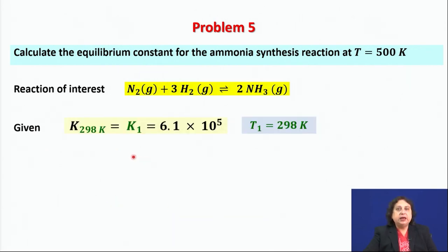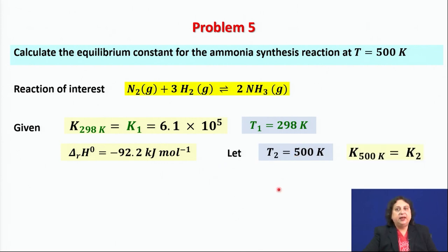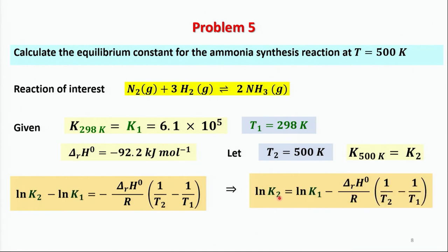Now all values are set: K₁ at T₁ = 298 K are available, the standard reaction enthalpy is known, and we assume T₂ = 500 Kelvin, so the equilibrium constant at 500 K is K₂. Using the Van't Hoff equation: ln K₂ = ln K₁ − (ΔRH°/R) × (1/T₂ − 1/T₁).